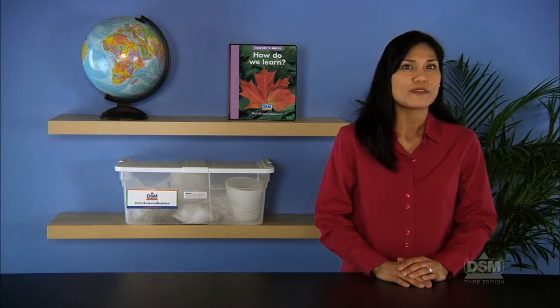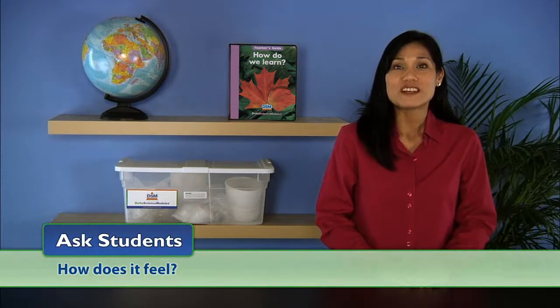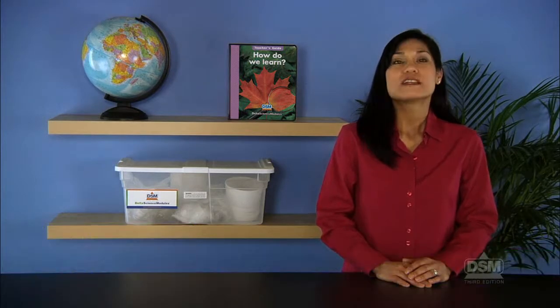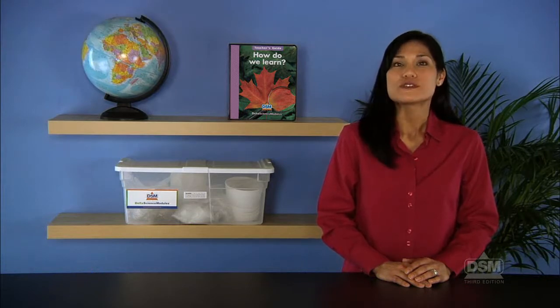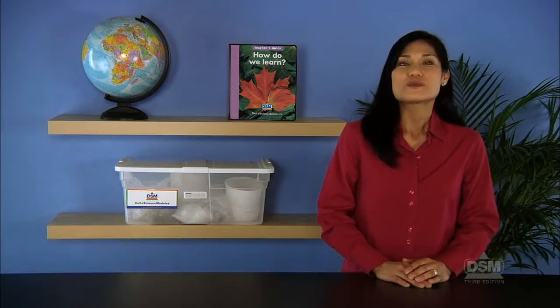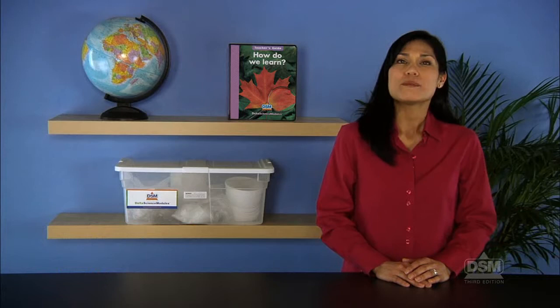Initiate a class discussion about how students can use their senses to learn about the objects by asking: Look at this object — what do you see? Touch the object — how does it feel? Does the object make a sound? What do you hear? Then point to several objects around the room and ask students what senses they would use to learn about each object. Encourage students to think beyond sight and consider other senses as well.